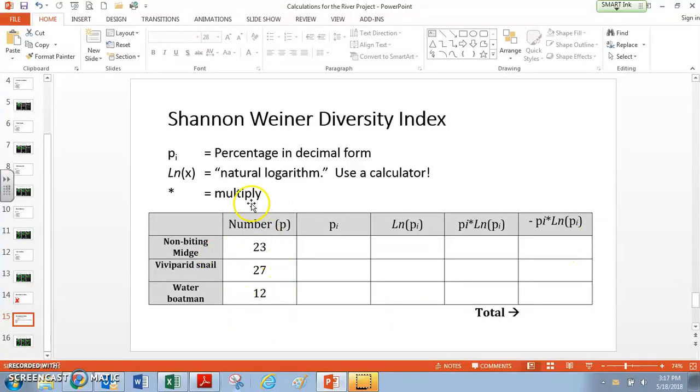So this is how we need to set up this table: with the species, a column for number, and then four more columns after it. And I'll talk about what each of these columns means.